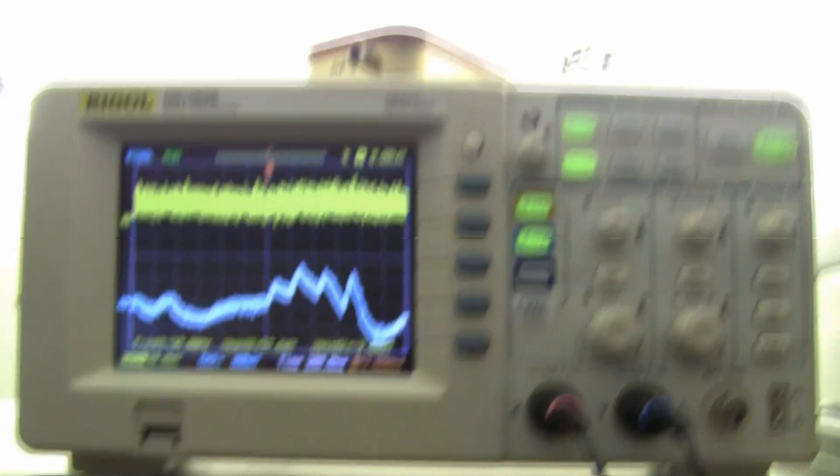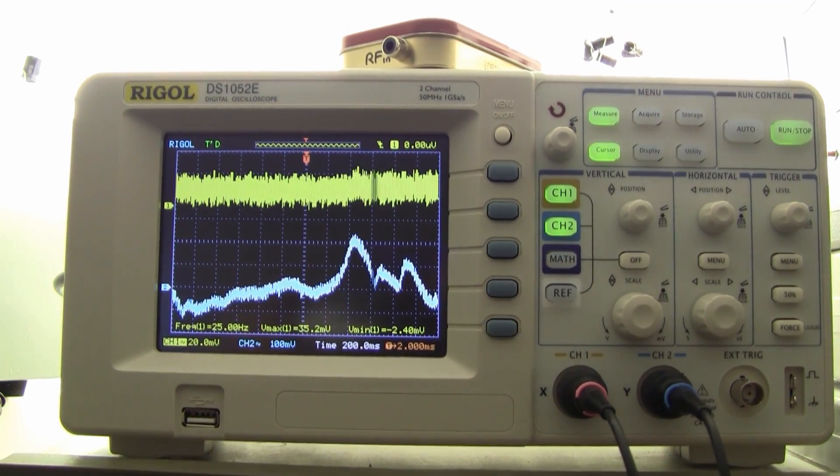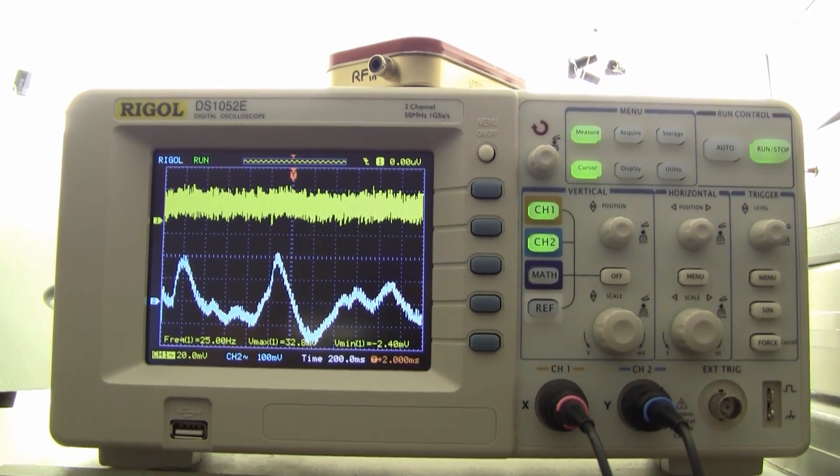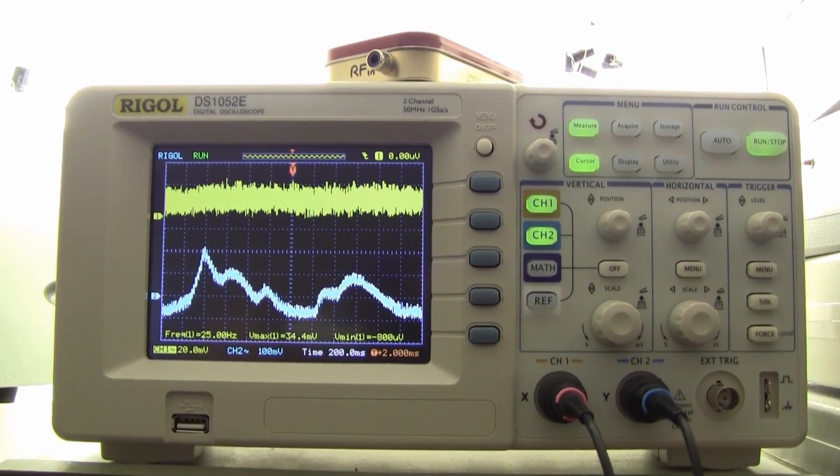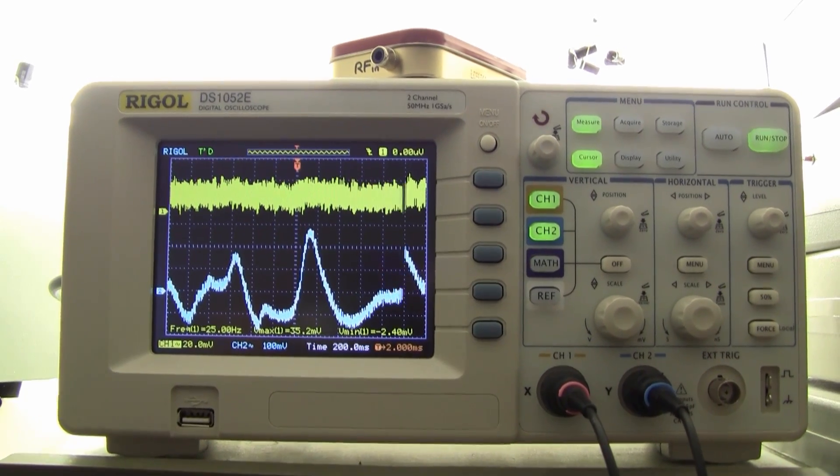And how it really works, we can see up here on the oscilloscope. The top trace, the yellow trace, is the raw signal out of the ion chamber. You can see it's pretty noisy. The bottom blue trace is low-pass filtered and then amplified quite significantly, only at the low frequencies.